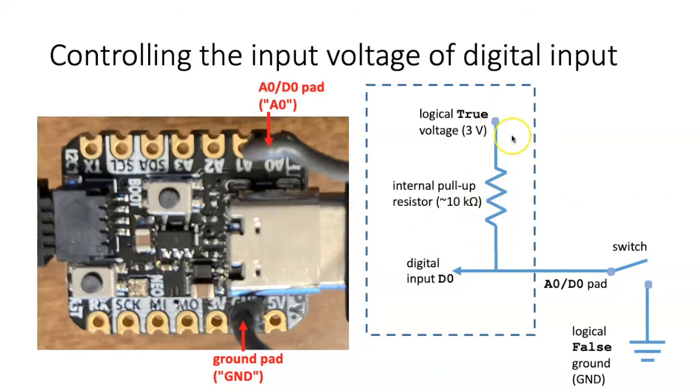We can do that by using what's known as an internal pull-up resistor. So we have a reasonably high resistance resistor here, about 10,000 ohms. And when the switch is disconnected, the voltage that's on the input line is three volts, because it's pulled up to that value by being connected through this resistor. And the value that will be reported to the input is true.